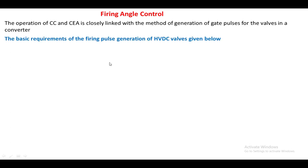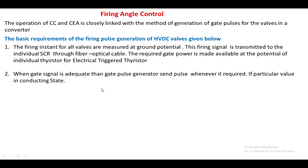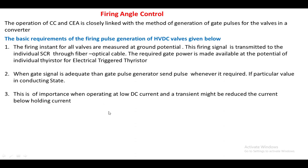When generating firing pulses there are some basic requirements. The first one is that the firing pulses are generated at ground potential and transmitted via fiber optic cable to the valve. The required potential is given to the valve by means of a driver circuit. The second requirement is that when the gate signal is adequate, the gate pulse generator should be available to give the firing pulse to the SCR or valves whenever required. When operating the DC voltage, transients occurring due to the DC voltage should be less than the holding current.